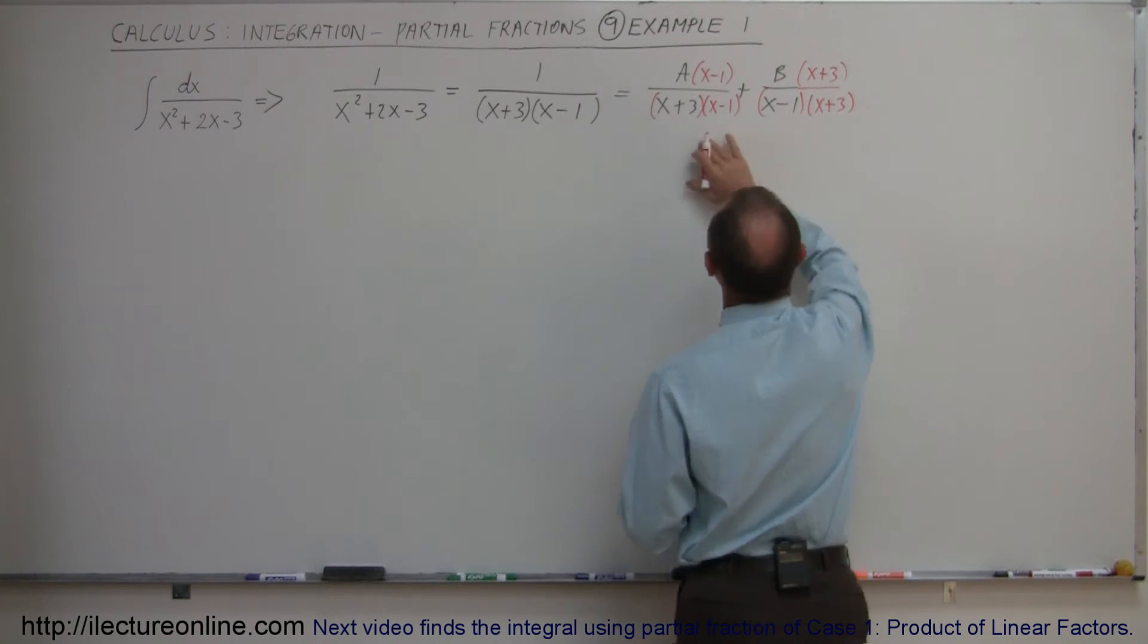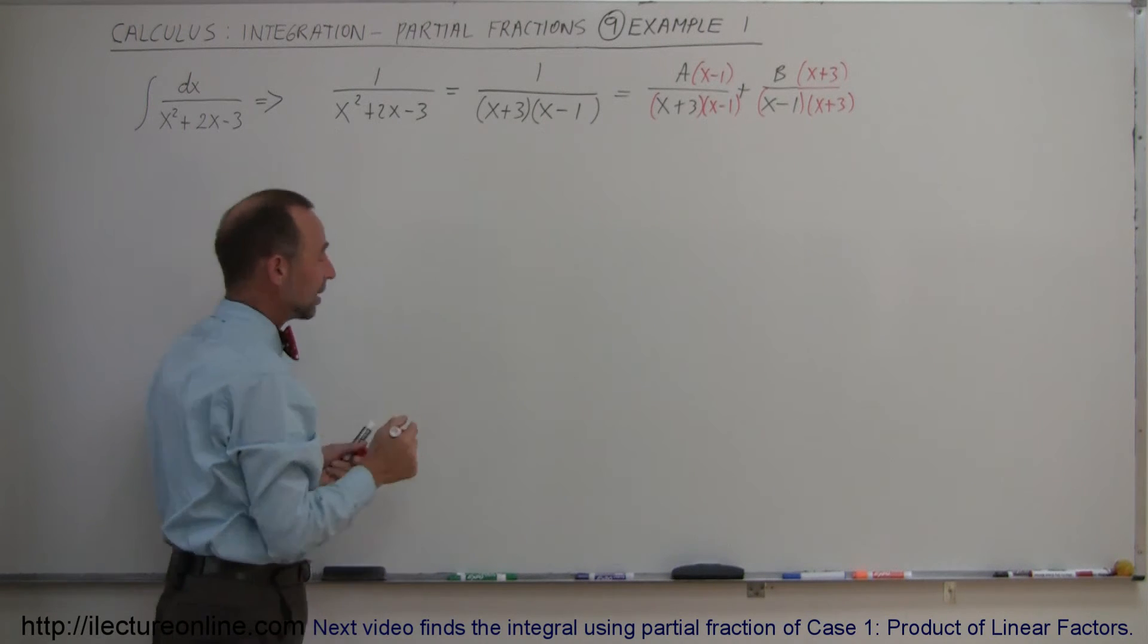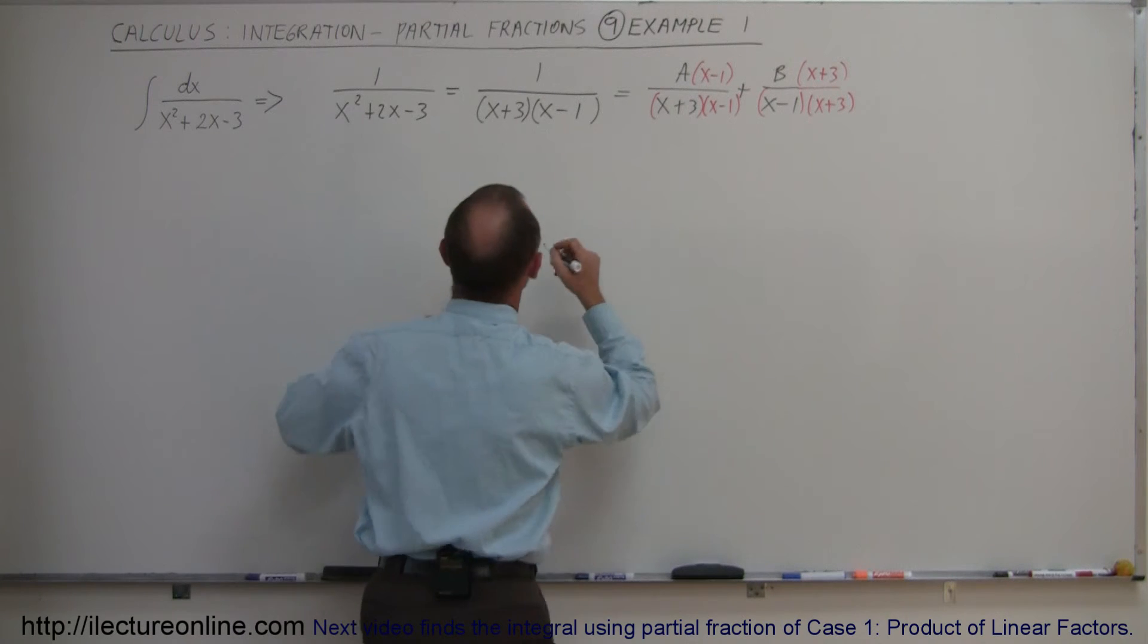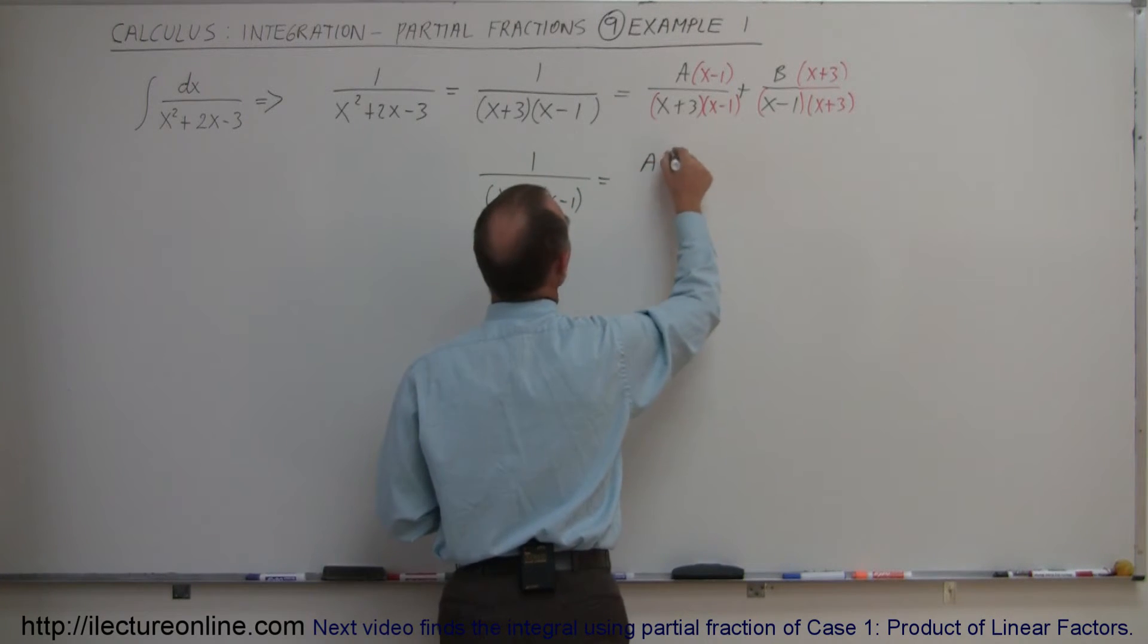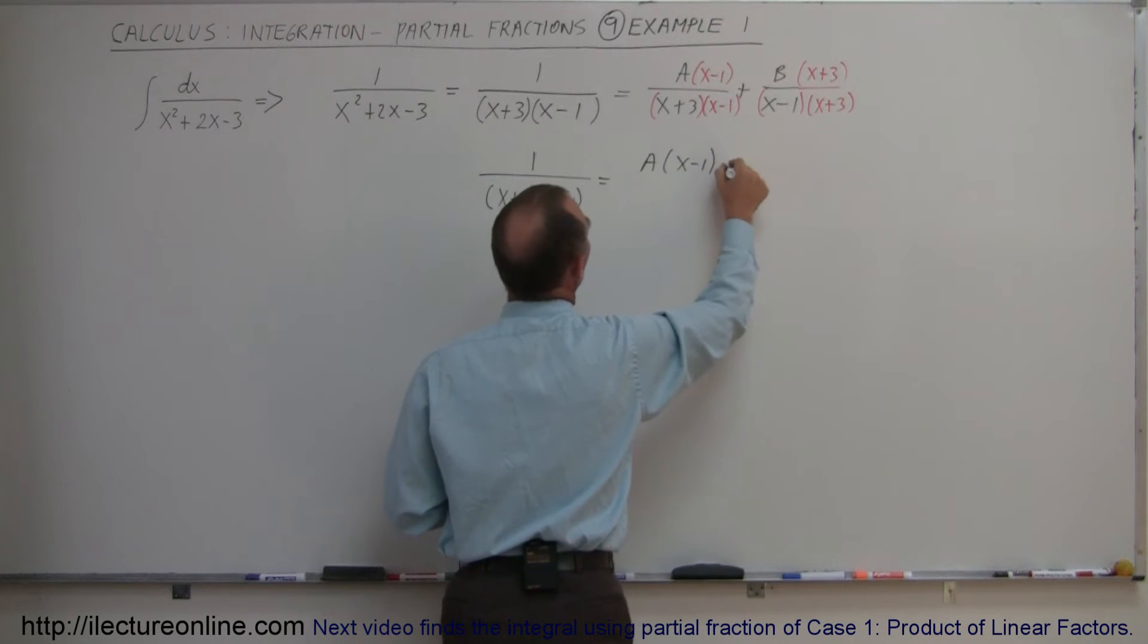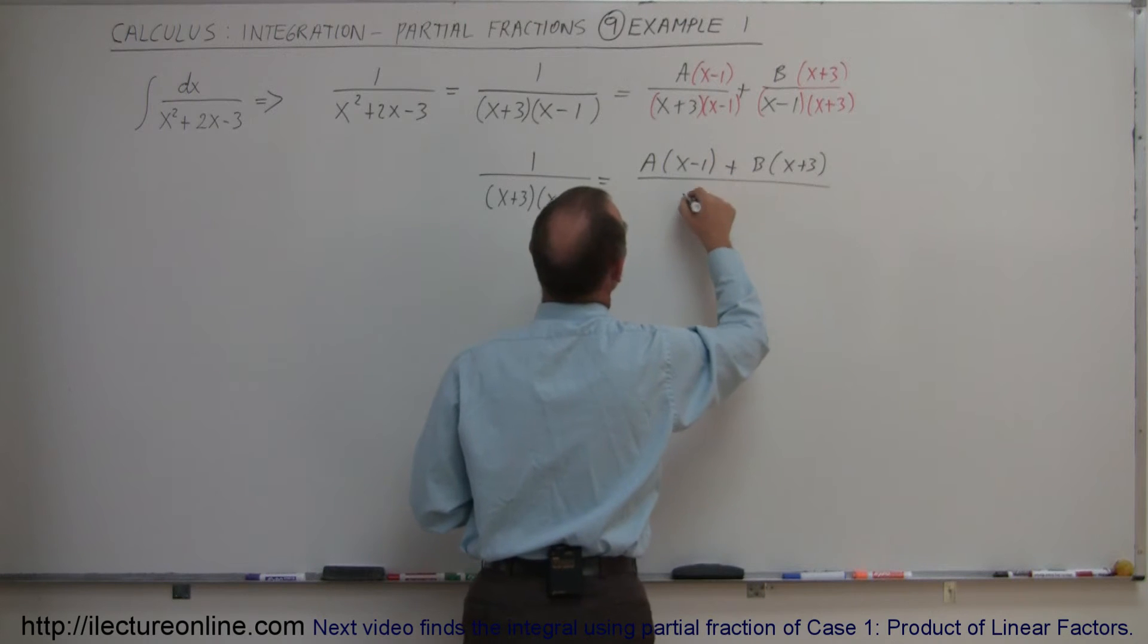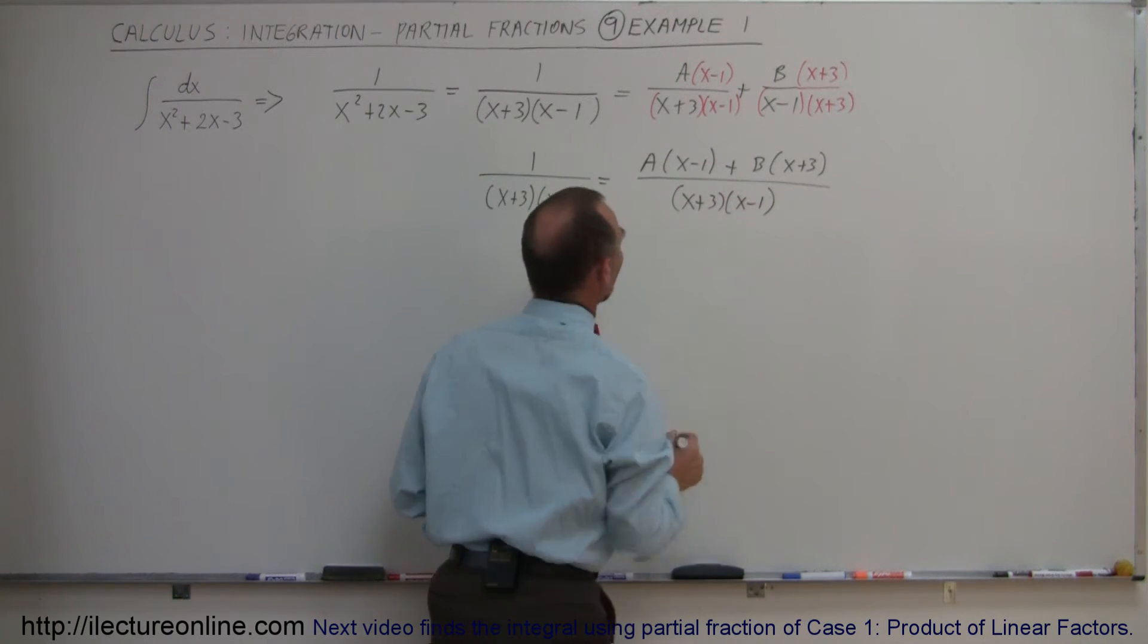Notice that in each case now, each fraction has a denominator that looks exactly like the one that I have over here, which means I can now put both of those fractions over the common denominator. So let's rewrite it now this way. I have 1 over x plus 3 and x minus 1, and that is now equal to A times x minus 1 plus B times x plus 3, and the whole thing divided over the common denominator of x plus 3 times x minus 1.